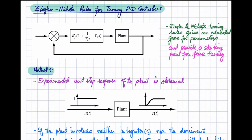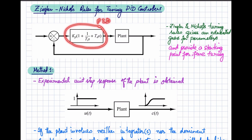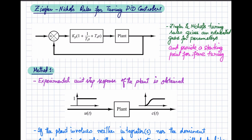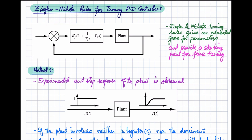In this video we will discuss Ziegler-Nichols rules for tuning PID controllers. You can see a closed loop diagram here with the plant and the PID controller that we are going to tune. It is a unity feedback path because H(s) is equal to one.